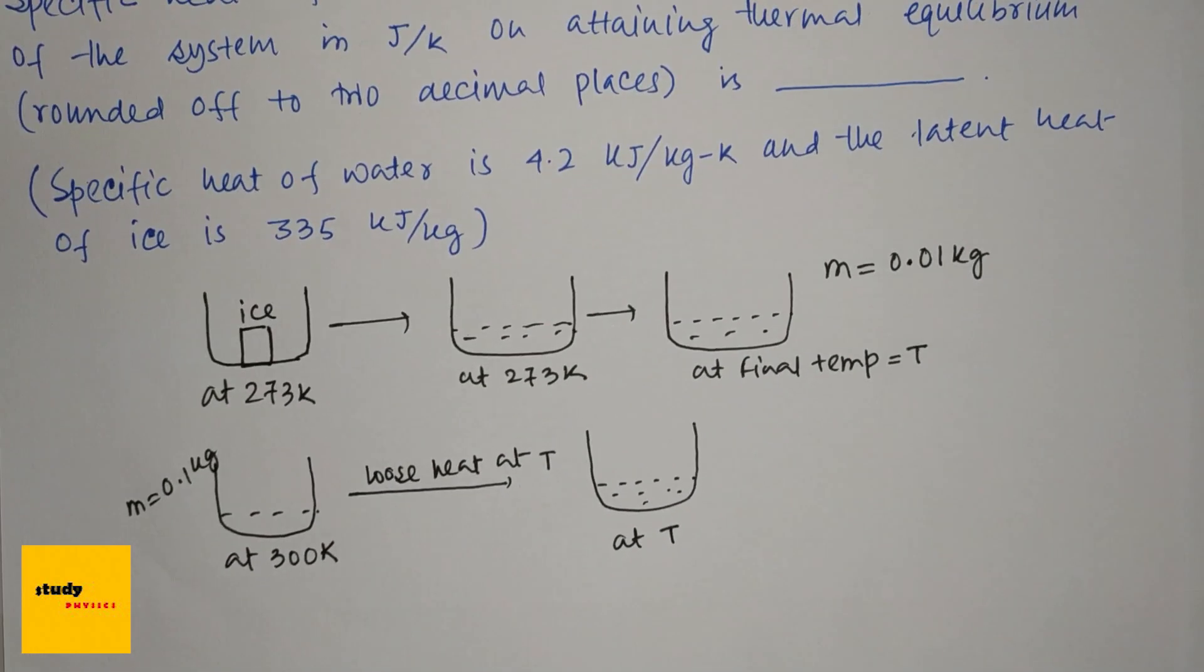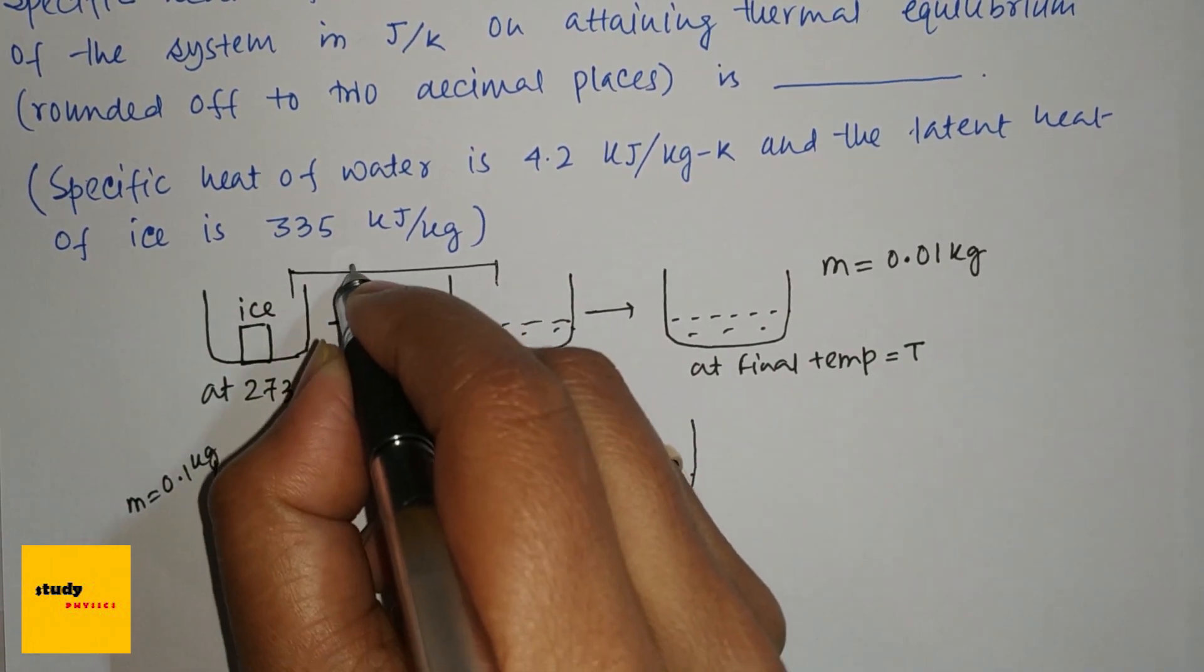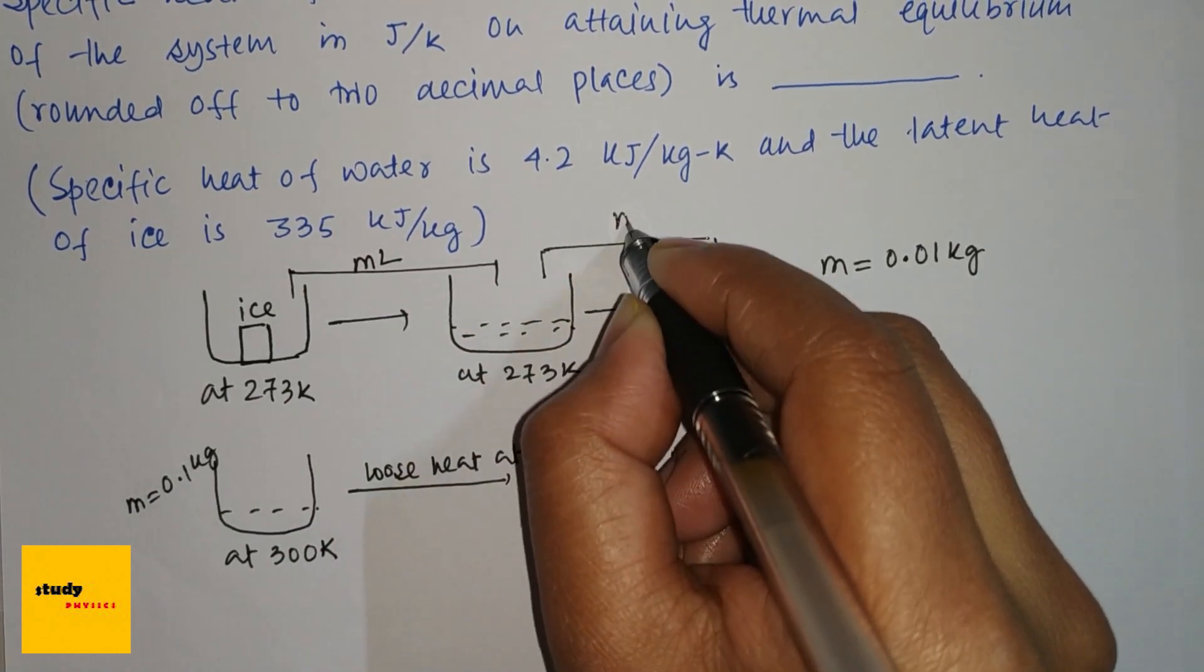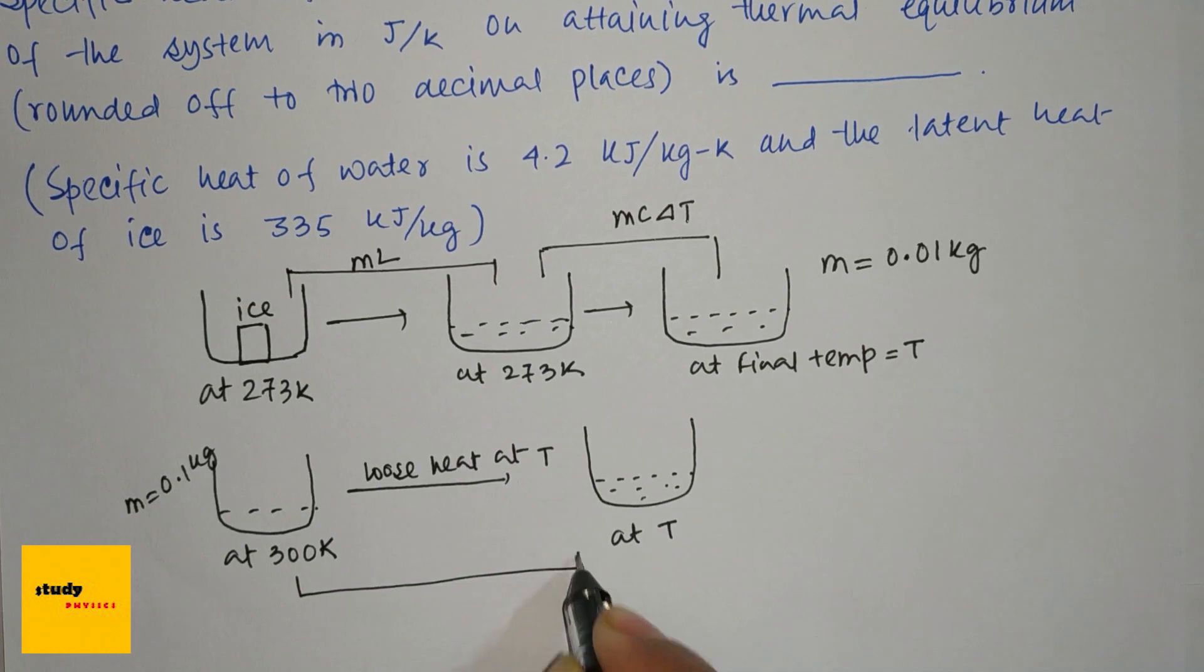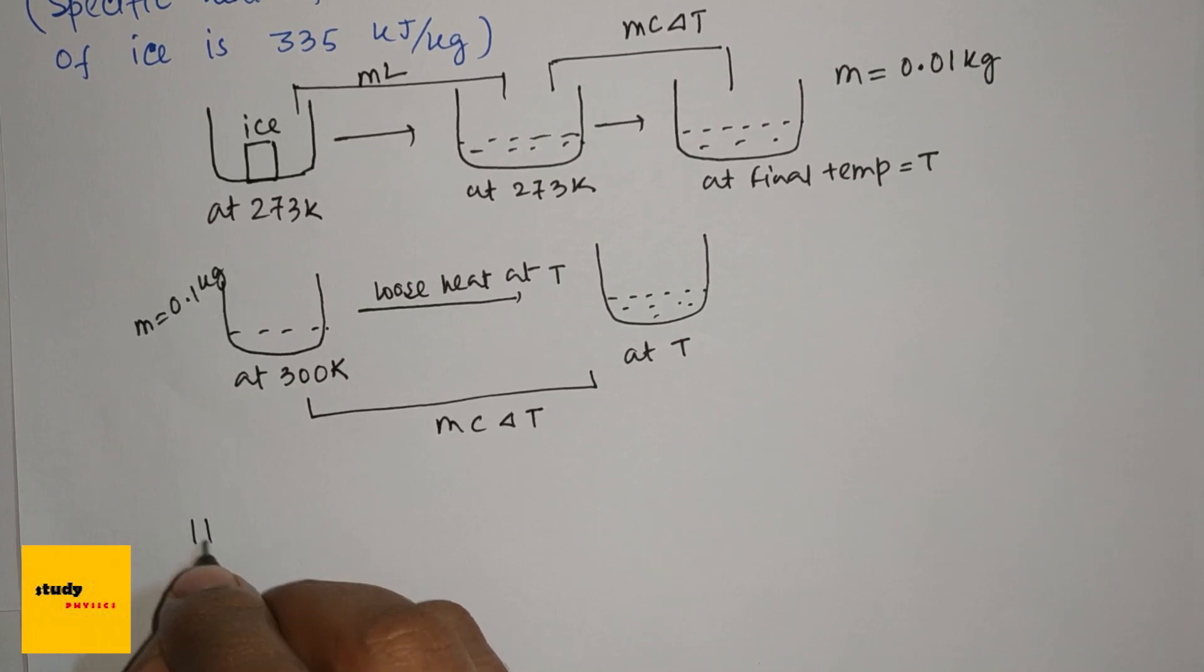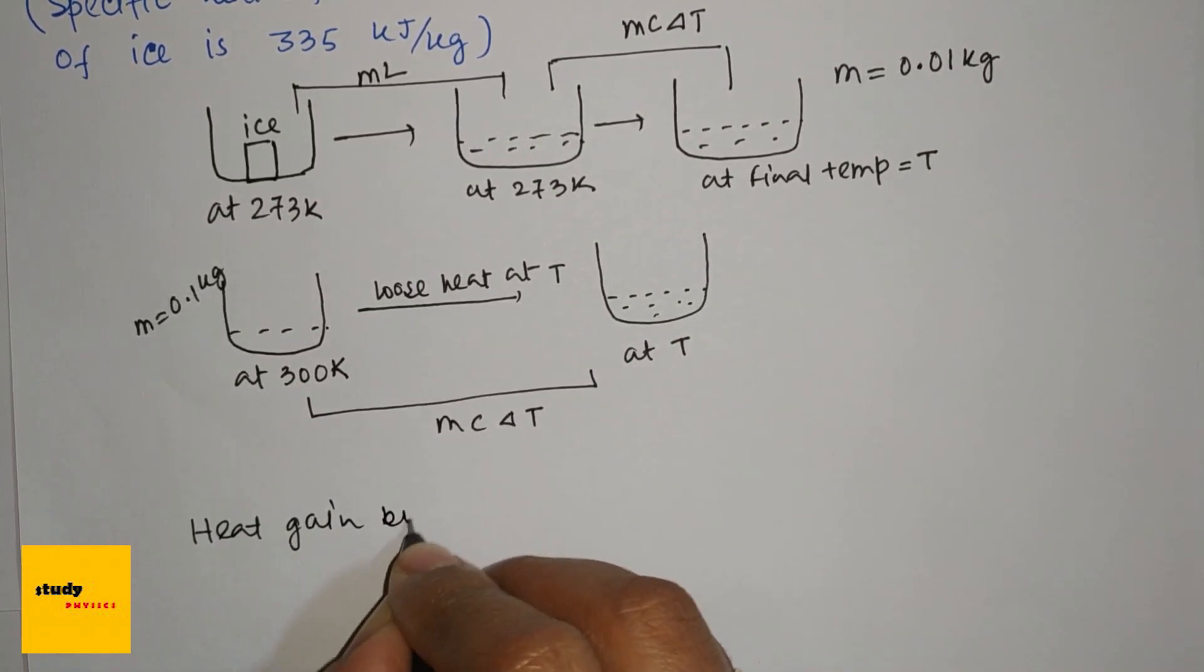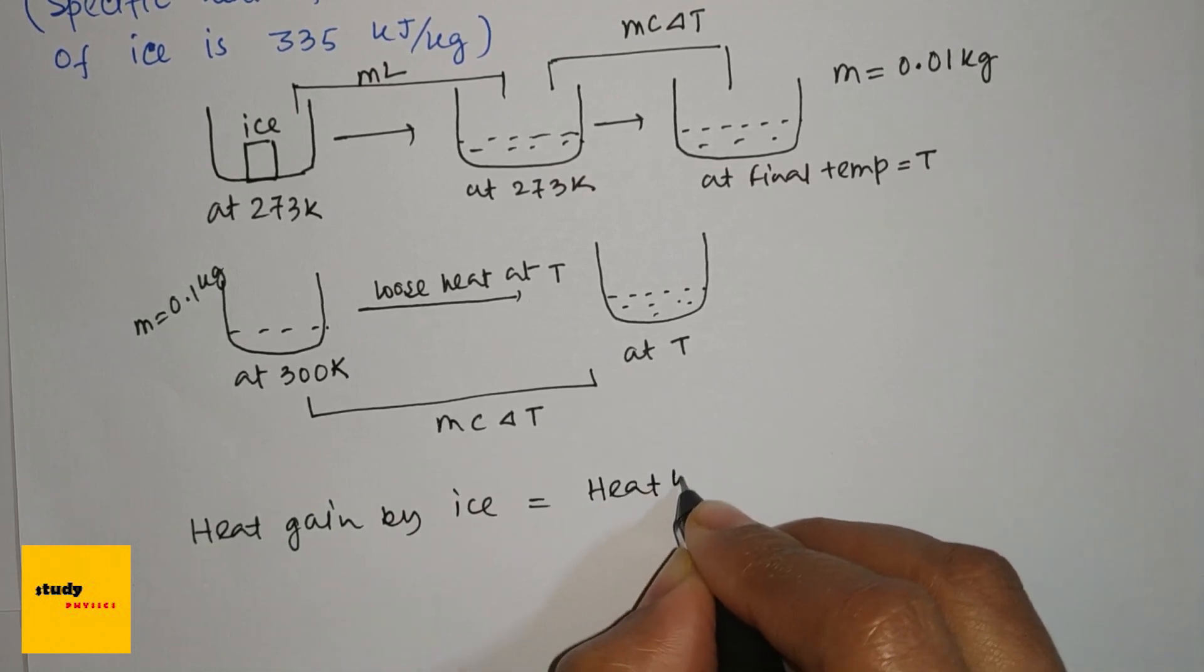Here, first for this we'll have the heat is ML, and here the heat is mc delta T, and here is mc delta T. So heat gained by ice equals heat lost by water.